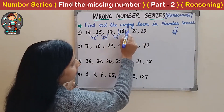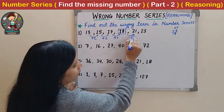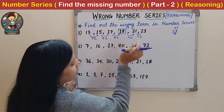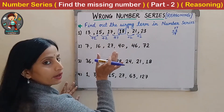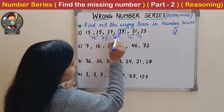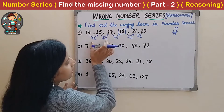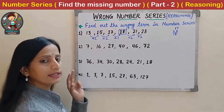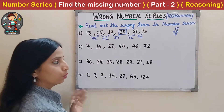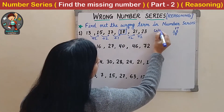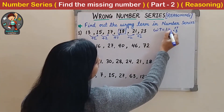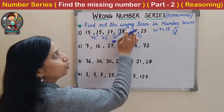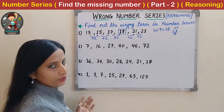Now let us check the pattern: 19 plus 2 is 21, and 21 plus 2 is 23. So only the number 18 is not following the pattern of plus 2 - every time the next number is increasing by 2. So the wrong term is 18; instead of 18 it should be 19.